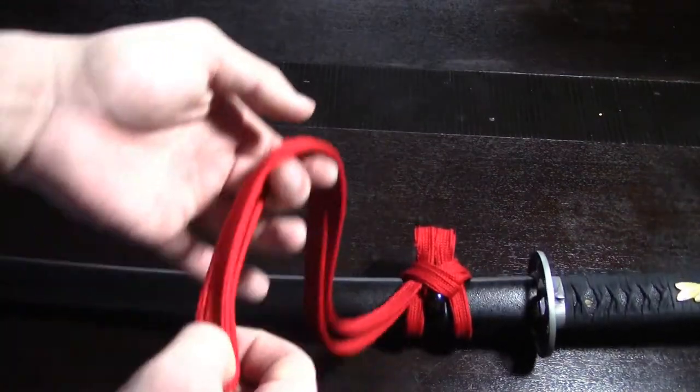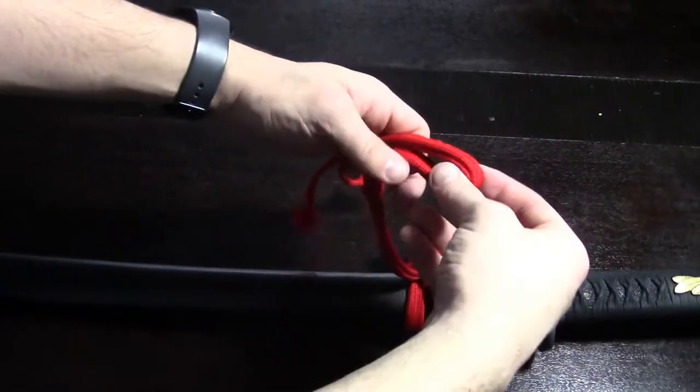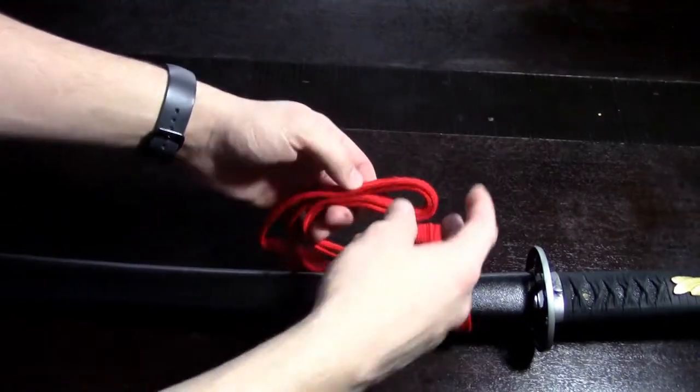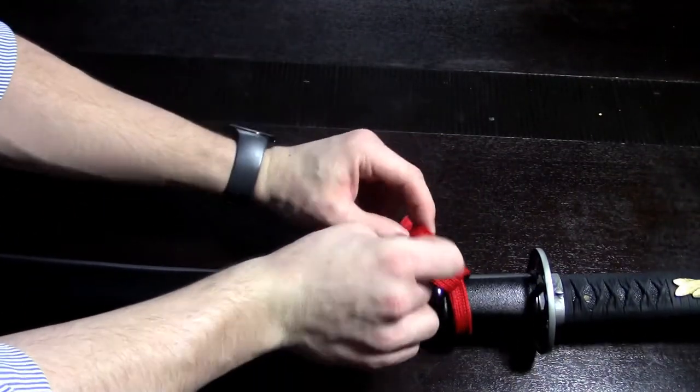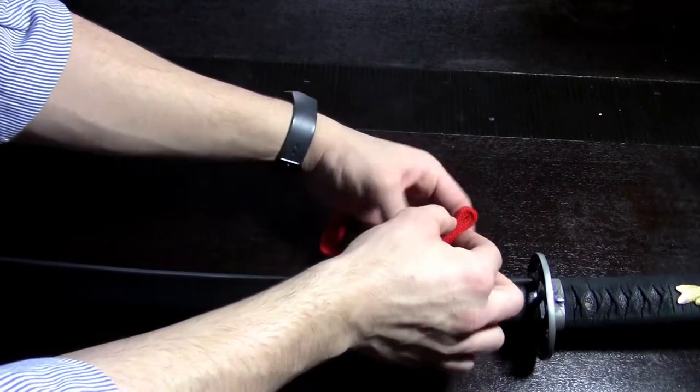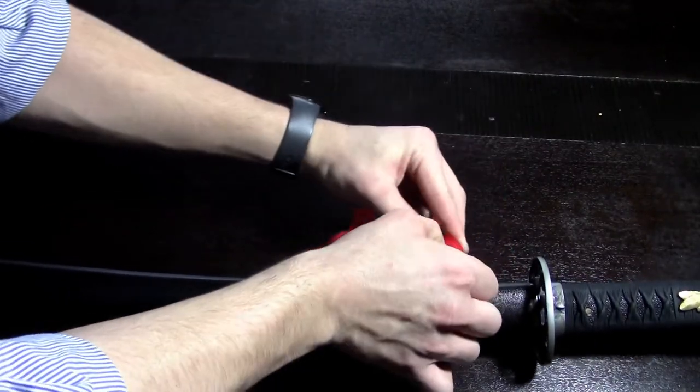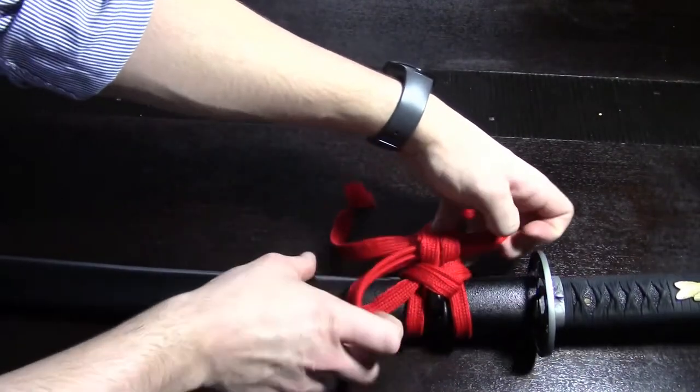Now from here, take your sagyo, and what you're going to do is fold it in half and go right up in these loops. So one, two, just like that. Pull it on through.